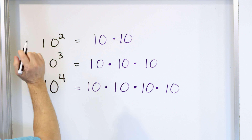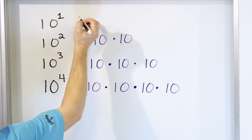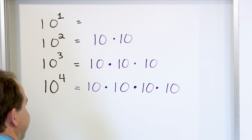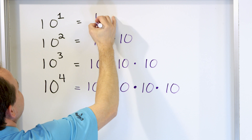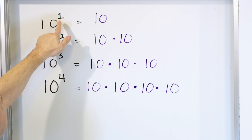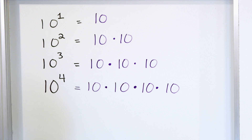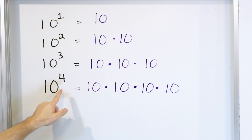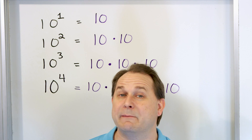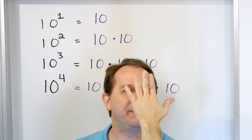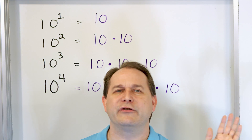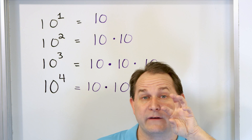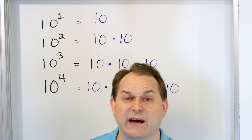What happens if you take ten and raise it to the power of one? Well, if four tens multiplied together, three tens multiplied, and two tens multiplied follow this pattern, then ten raised to the power of one is just ten. When you have anything raised to the first power, it's just the same number. Second power: two of them multiplied together. Cubed means three multiplied together. Fourth power: four multiplied together. To the 250th power would just mean 250 of those things multiplied together.